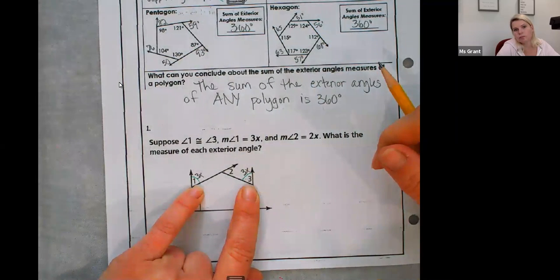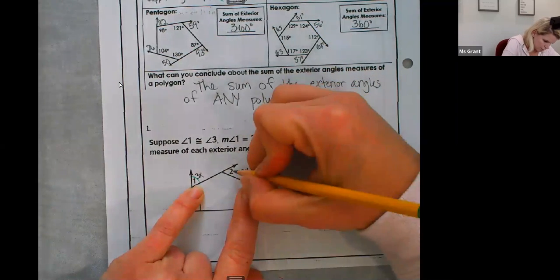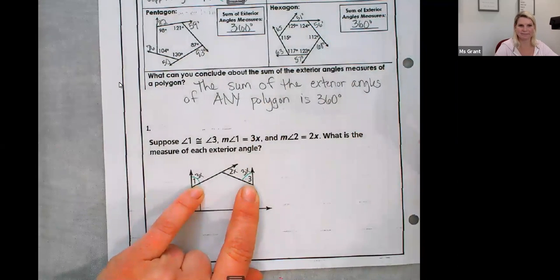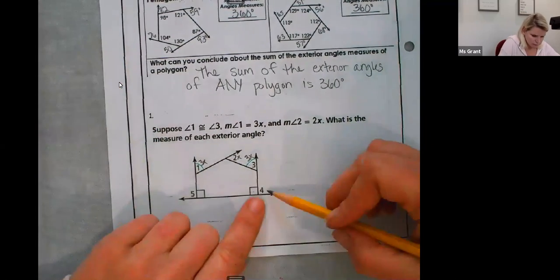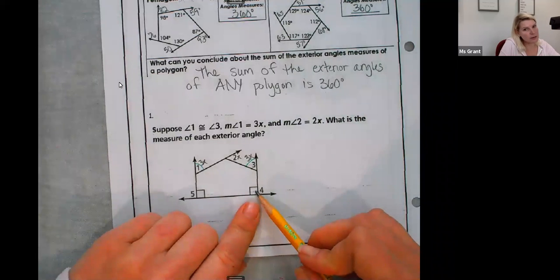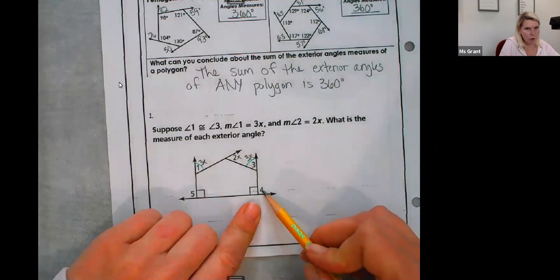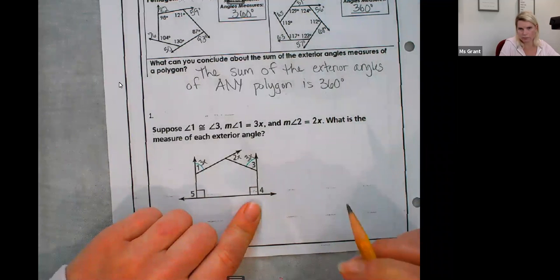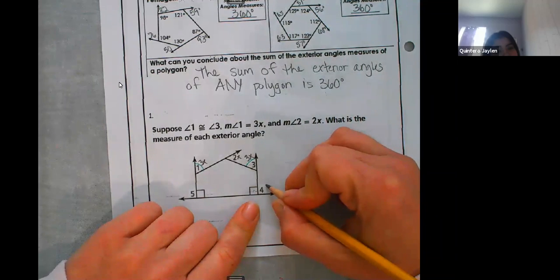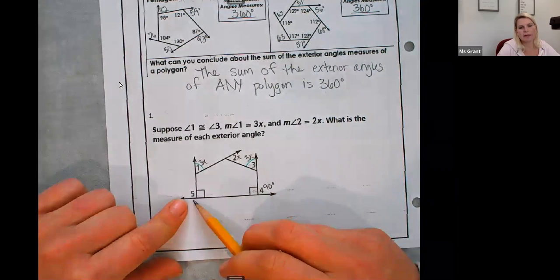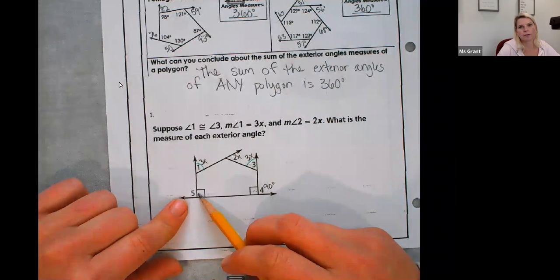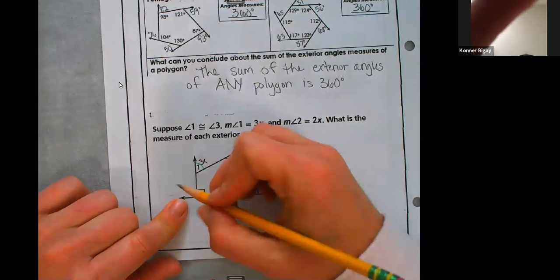Now angle two is 2x. Just put an x next to the two. What is the measure of each exterior angle? Well, we don't even know four and five. Well, if they're supplementary, this is a 90 degree angle, how big is angle four? Someone raise their hand, don't yell out. How big is angle four? Jalen. 90, 90 degrees. Someone else, how big is angle five? Connor. 90.